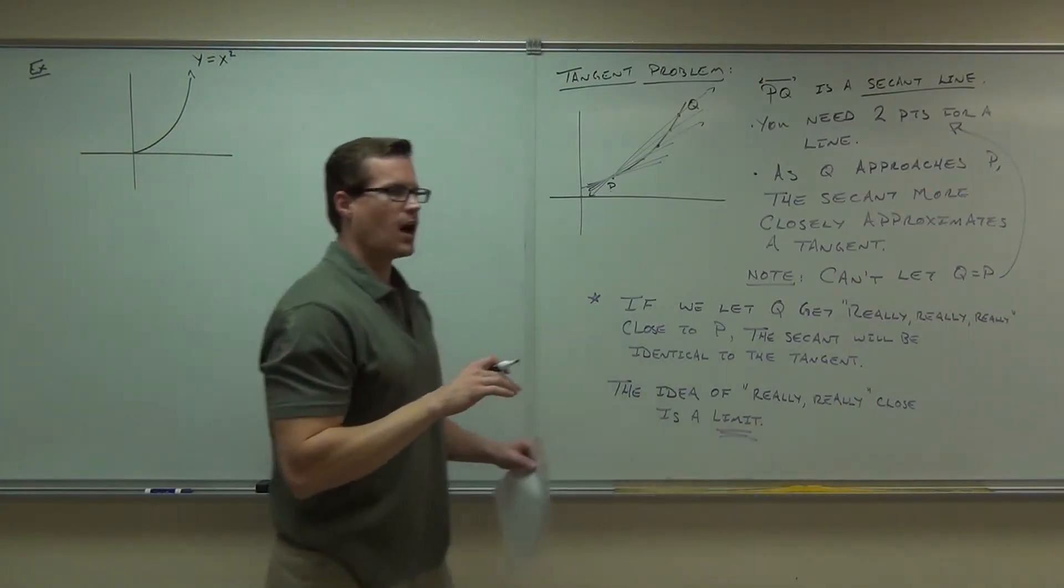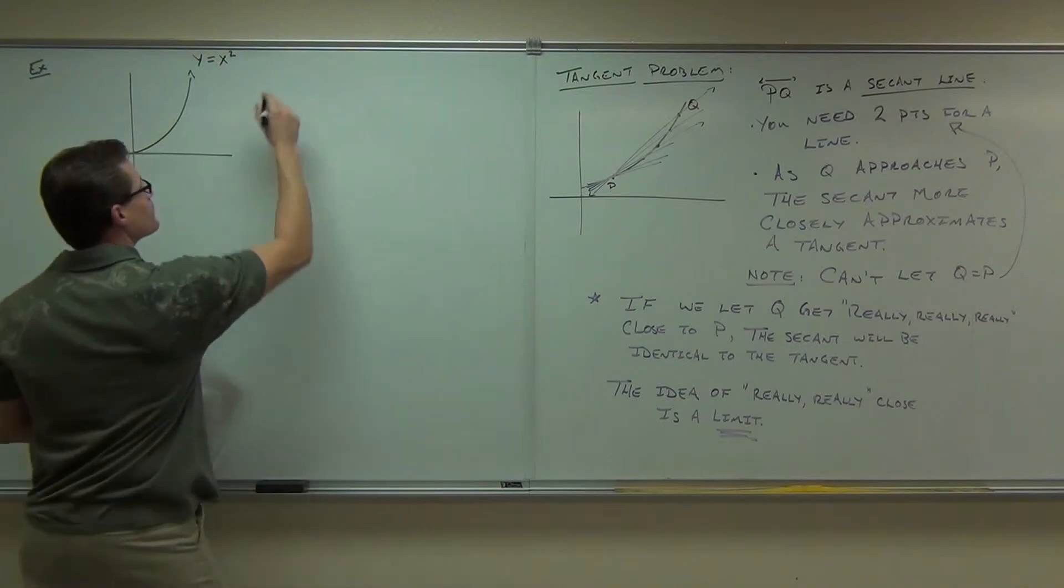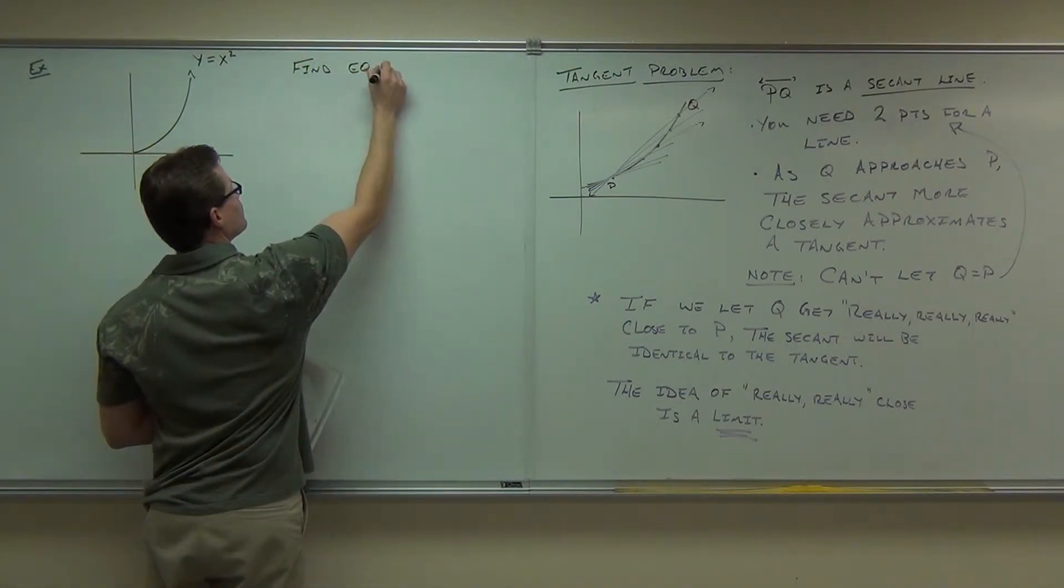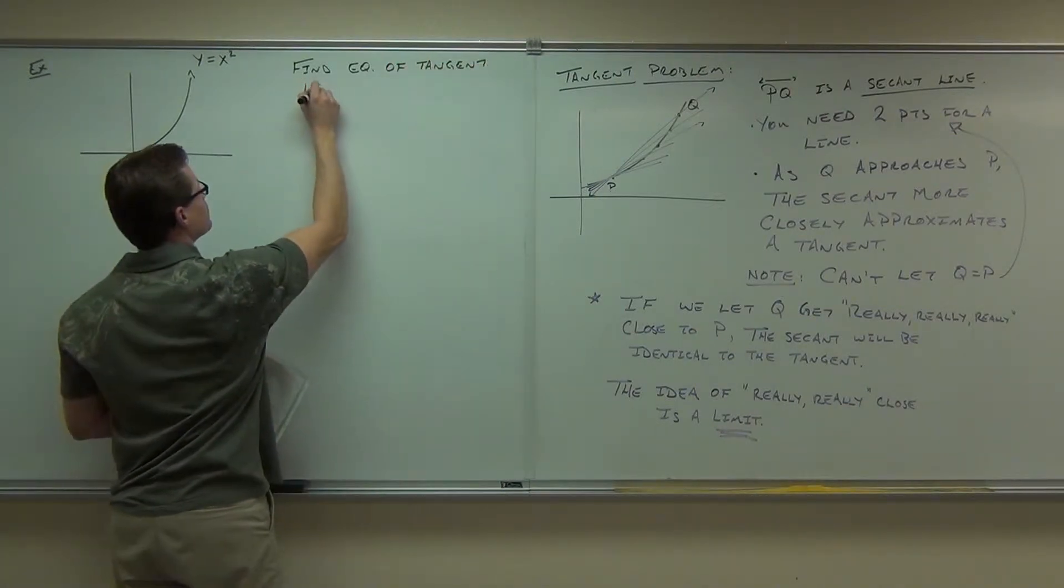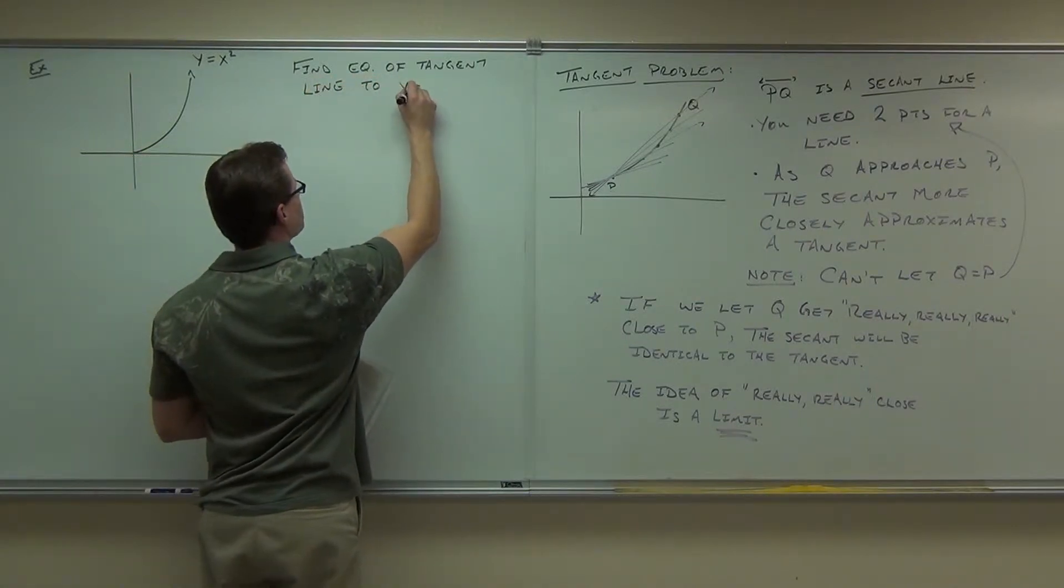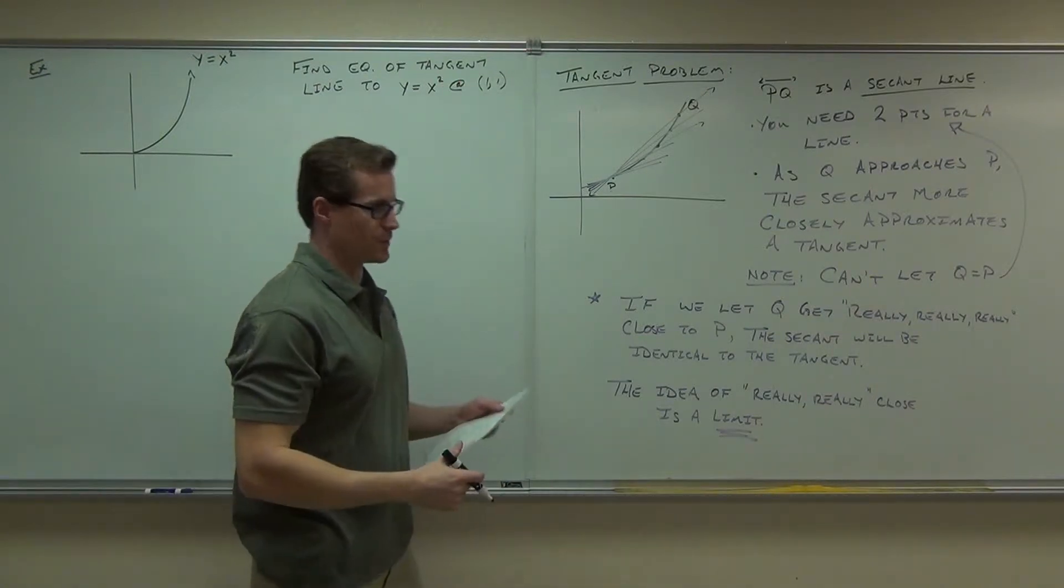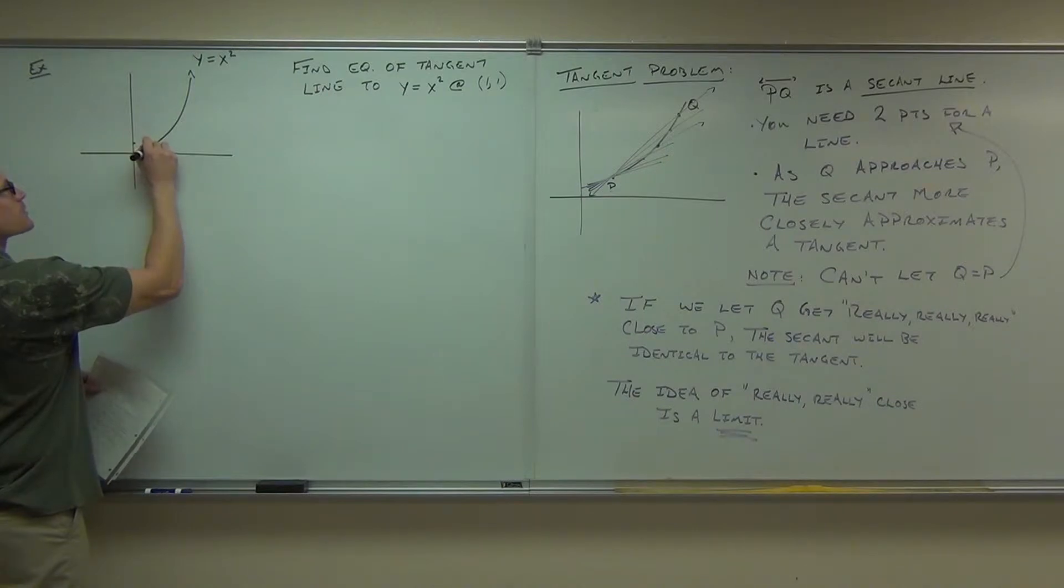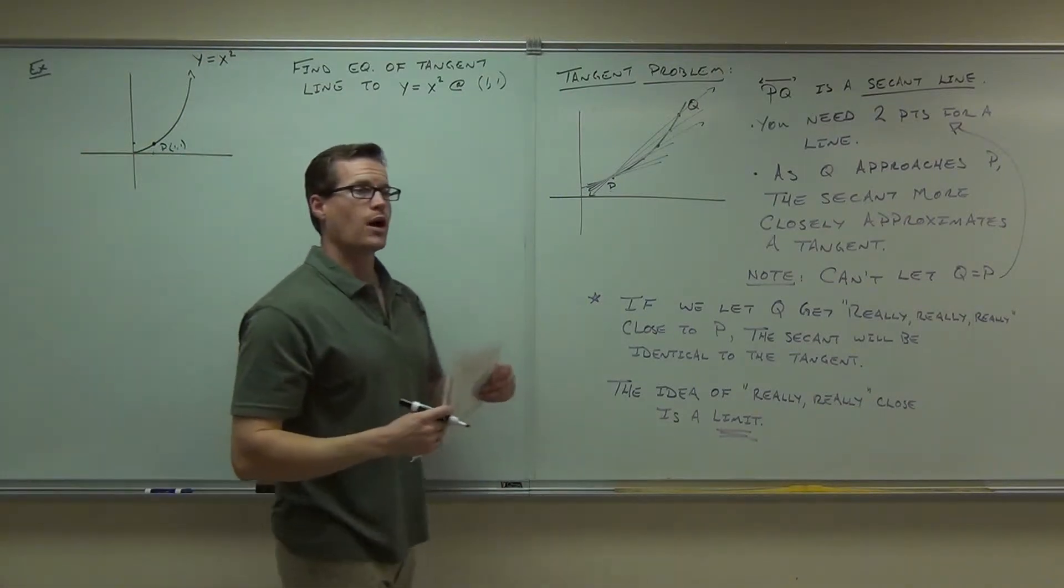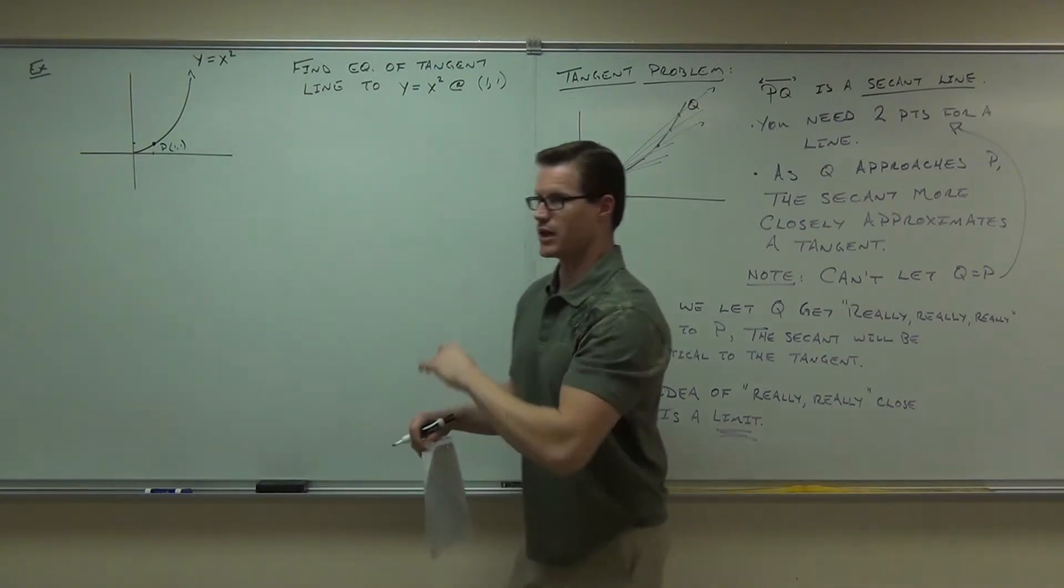Here's the goal to this problem. I want us to find the equation of the tangent line to this curve at a certain point. Specifically that one. One, one. Well, let's go over to one, one. And let's put a point there. So, P is the point one, one. I'm going to walk you through how we're going to do this right now. I'm going to walk you through how we're going to make up a tangent line using this idea.